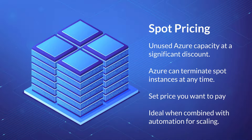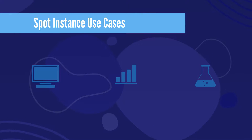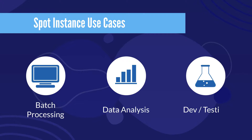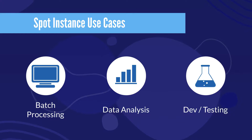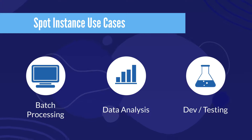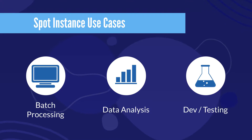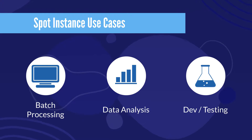Spot pricing is ideal when combined with automation for scaling. Spot instances are suitable for things like batch processing, data analysis, and non-critical development and testing — things that can sustain sudden power-offs or terminations of those instances.